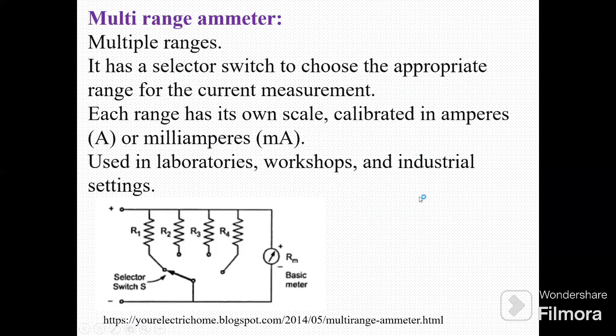The second device is a multirange ammeter. Its name multirange itself implies that it has multiple ranges. We have to select the proper range using a selector switch. See this circuit diagram. Here R1, R2, R3, R4 are the resistances. Basic meter is here. Here is the battery. Selector switch is there.